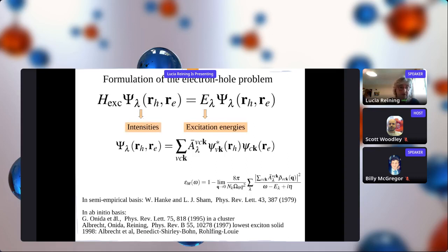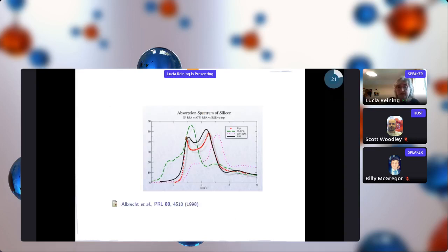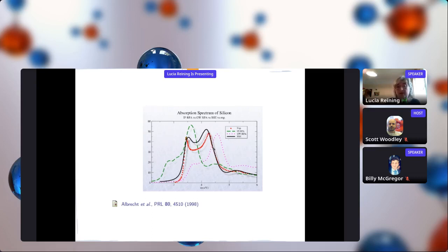Such a formulation was done already in the 1970s, in particular by Hanke and Sham working in a semi-empirical basis. Later we transformed this into first-principles methods using first-principles electronic structure. For silicon, we just saw the GW result in pink when neglecting the electron-hole interaction. Now we switch on the electron-hole interaction and solve what is called the Bethe-Salpeter equation, getting the black curve, which is in very good agreement with experiment both in positions and line shapes, in particular the enhancement at the absorption onset.